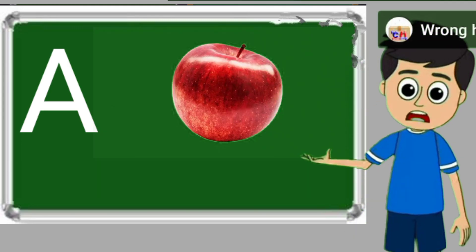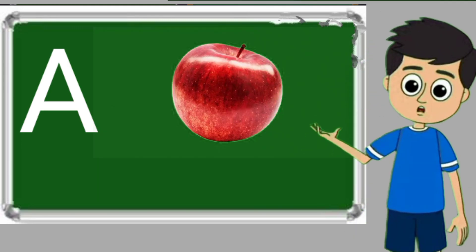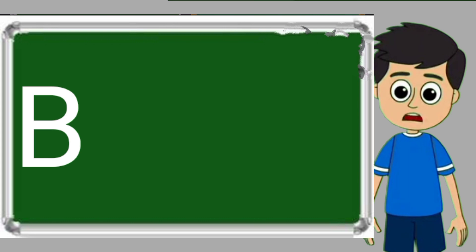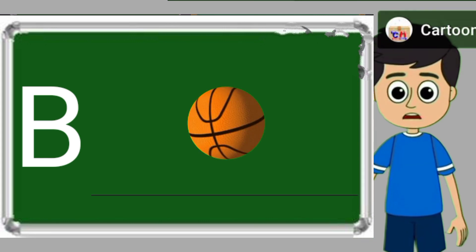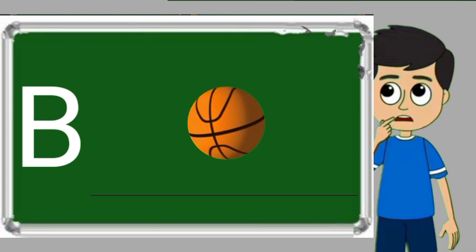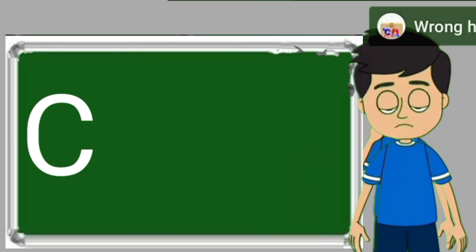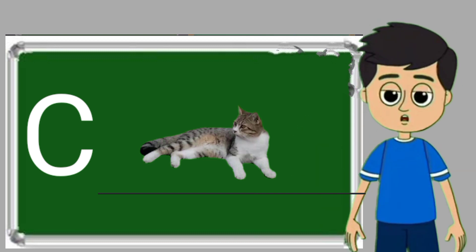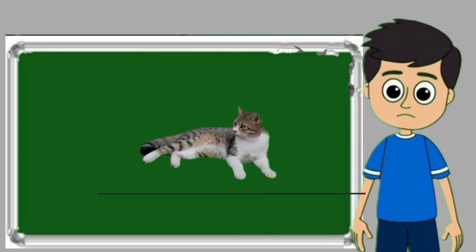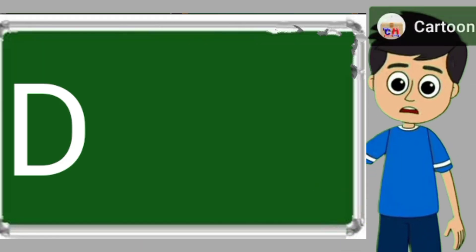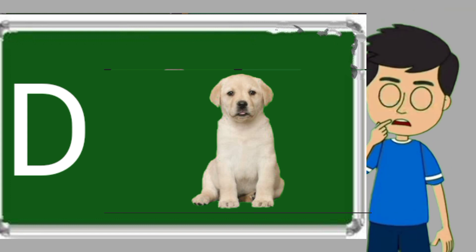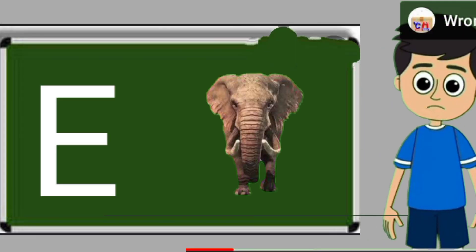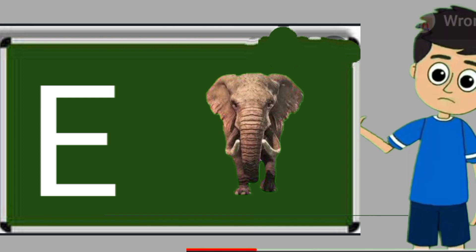A for apple. Apple means save. B for ball. Ball means gain. C for cat. Cat means billy. D for dog. Dog means kutta.